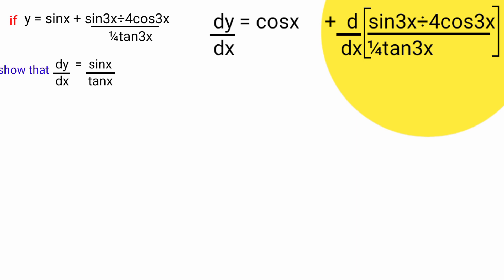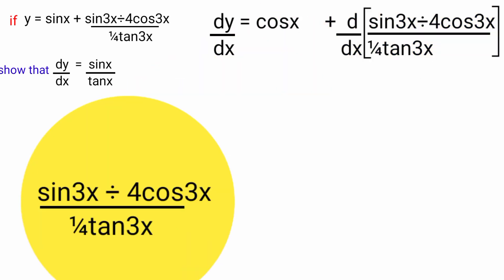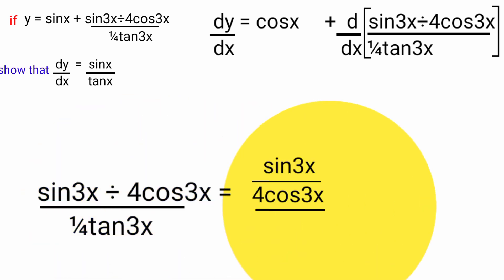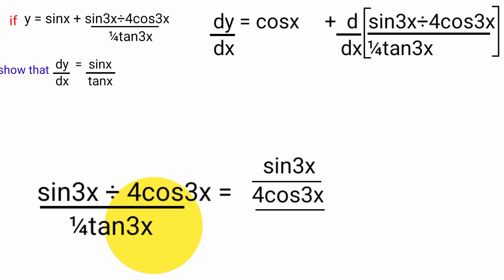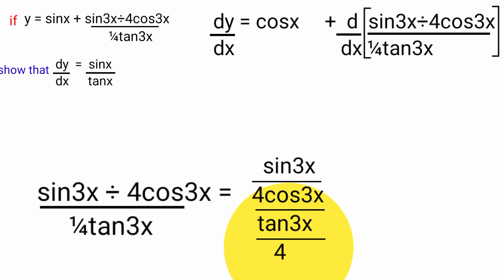Let's first simplify the expression. Sin 3x divided by 4 cos 3x can be written as the fraction sin 3x over 4 cos 3x, and 1 over 4 tan 3x is 1 over 4 times tan 3x, which equals tan 3x over 4.